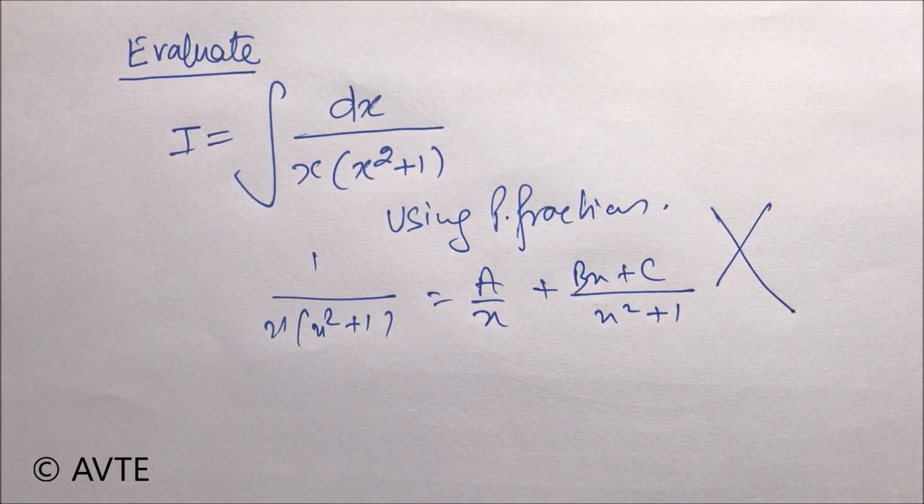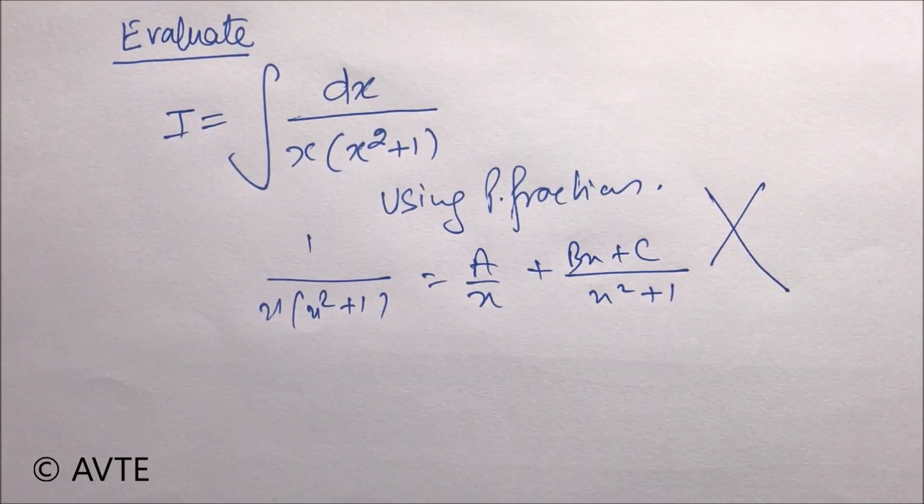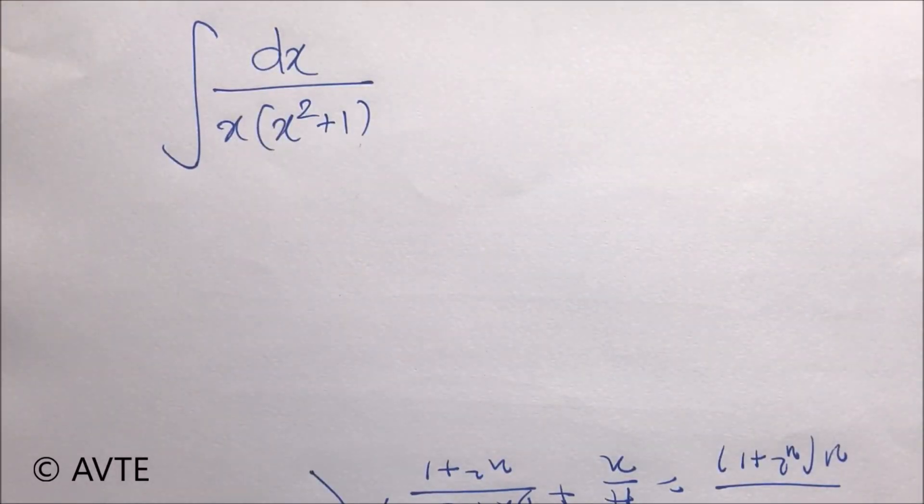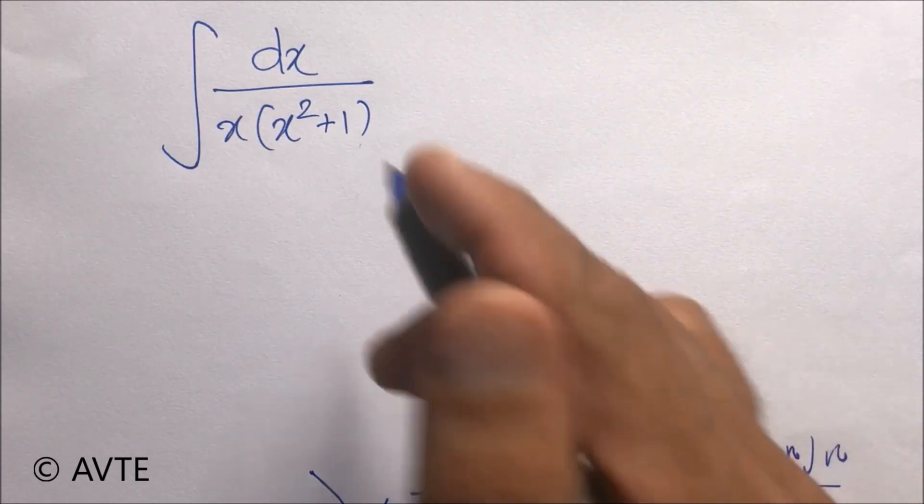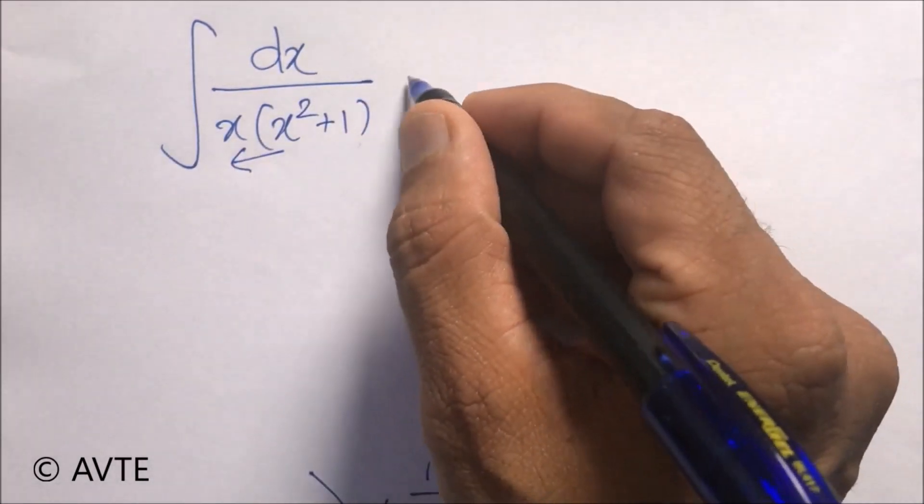So I'm giving you the trick so that you can solve this question in a minute. I'm writing the question once again. Instead of applying the partial fraction, it's better you take x square common.